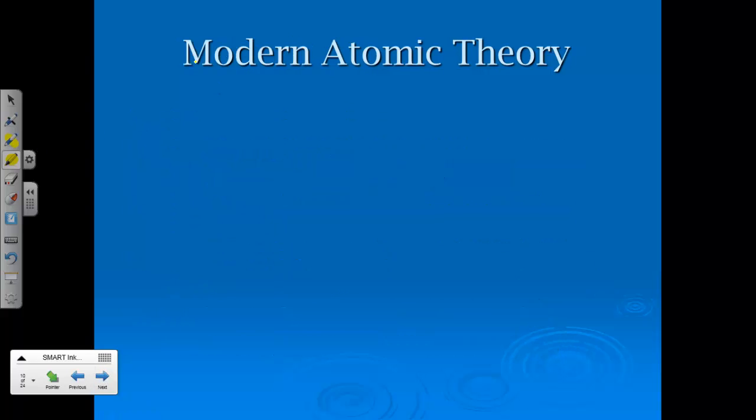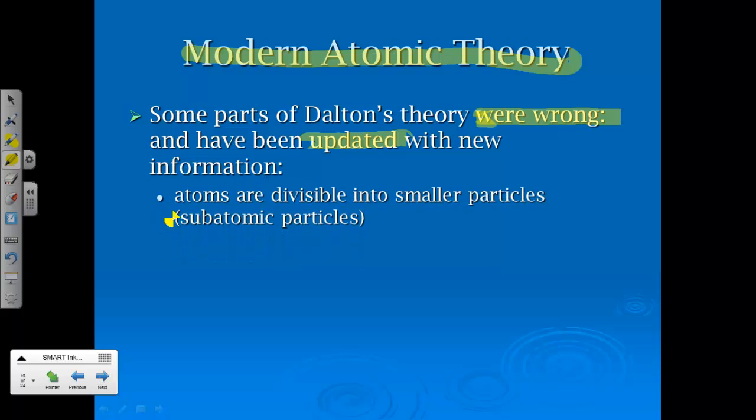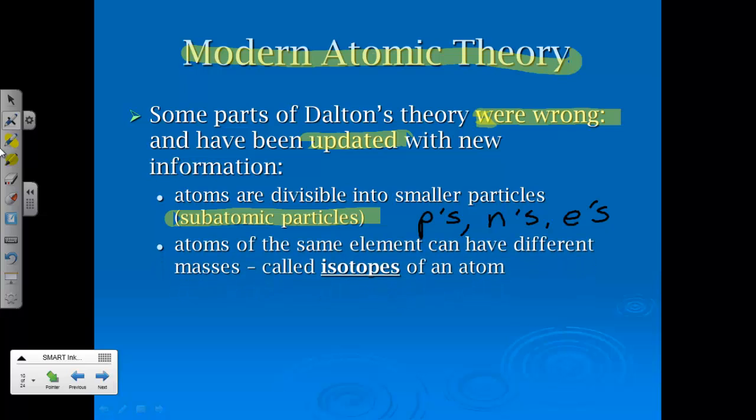Now, one thing about Dalton's law is that it was really good for the 1800s, but there were some discoveries and some updates that had to be made once we had new information. The first one, or so I've stated here, it says some parts of Dalton's theory were wrong. I don't necessarily think wrong is the right term, as I may have just simply should have stated, have been updated. And that's what it says here. They've been updated with new information. The first part being that atoms are divisible. And the new information that we got is the presence of subatomic particles, which we'll talk about here in a minute, meaning protons, neutrons, and electrons. And so, in essence, once we discovered these subatomic particles, we just had to update Dalton's theory to include that idea. He wasn't totally wrong. Just needed some updating.